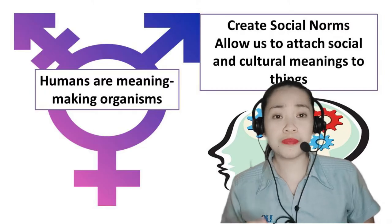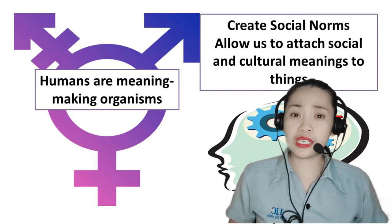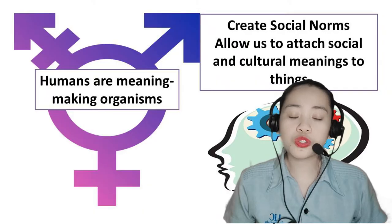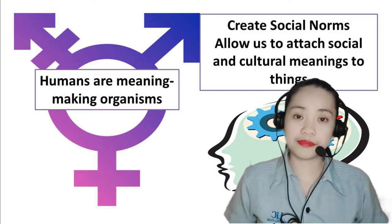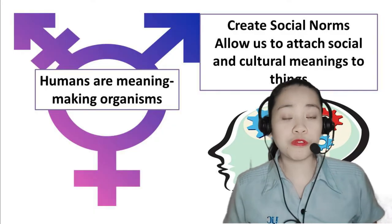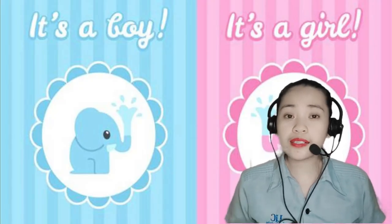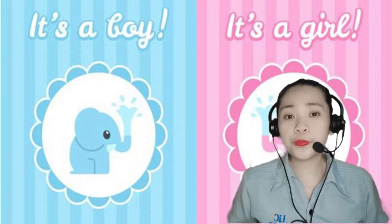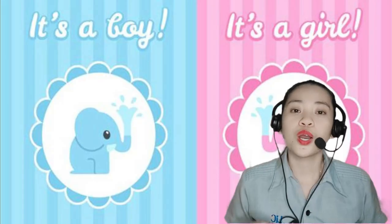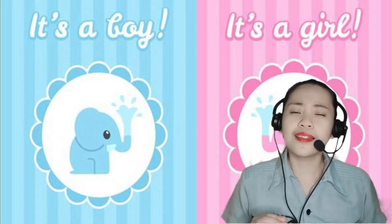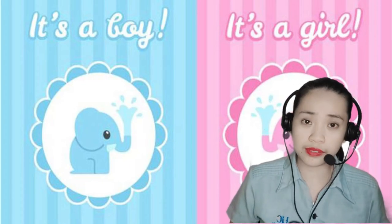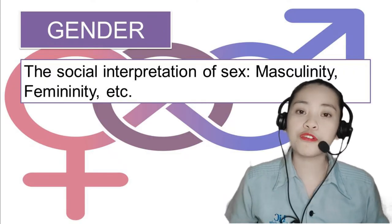However, humans are meaning-making organisms. Our ability for higher-order thinking and our tendency to create social norms allow us to attach social and cultural meanings to things, including our sex. For example, males are typically expected to be masculine and females are expected to be feminine. Once parents are aware of their child's sex — male or female — during birth or through prenatal procedures such as ultrasound, they automatically attach social and cultural meanings to their child's sex, setting expectations in terms of how their child should behave. This social dimension of one's sexuality is referred to as gender.